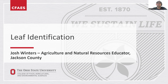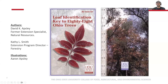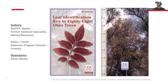Through this video, I will introduce a type of book that we can use to help us whenever we're trying to identify the different types of trees on our property. This helpful booklet is called Leaf Identification Key to 88 Ohio Trees, with the author being Dave Apsley — a former Extension Specialist in Natural Resources — and Kathy Smith, our Extension Program Director for Forestry. Illustrations were also done by Aaron Apsley. Take note of the back page, which has a measuring scale of 0 to 8 inches. This is very useful when measuring out in the field, since many requirements ask whether certain leaves are below a certain inch.